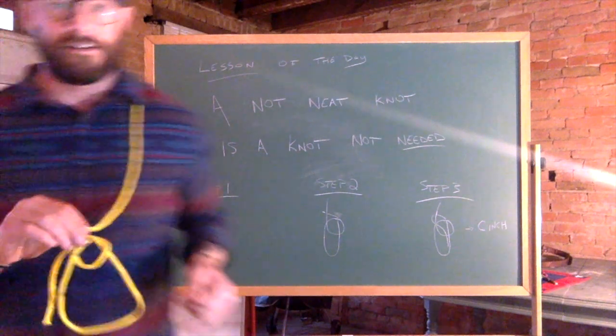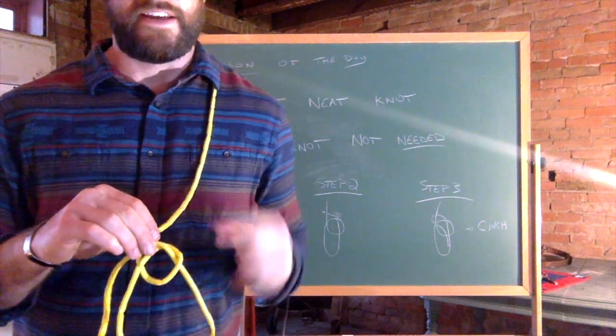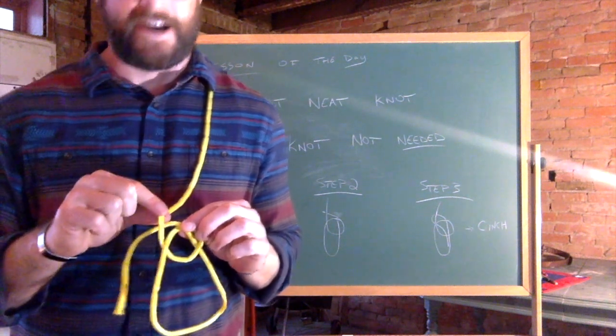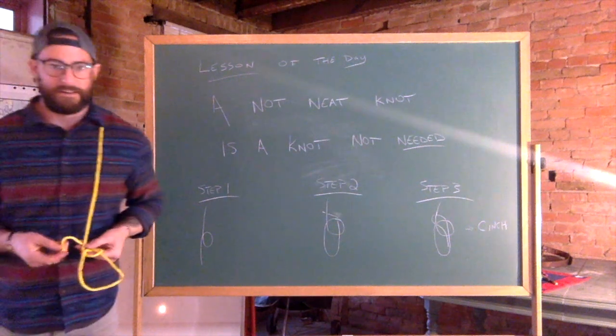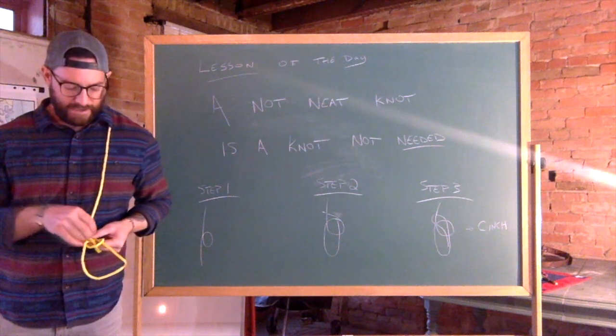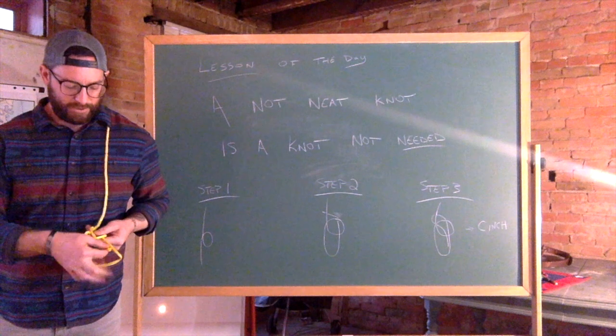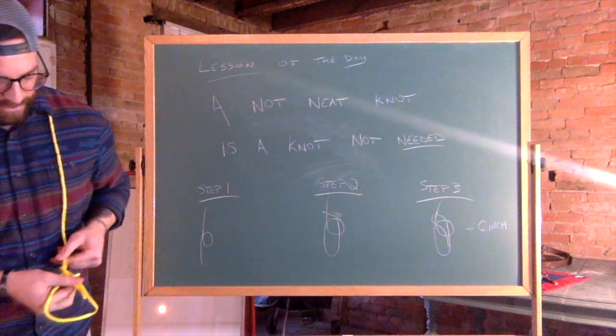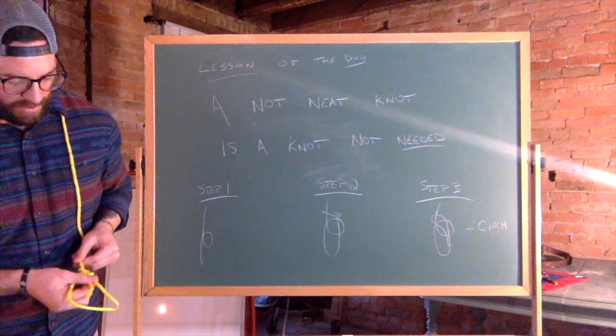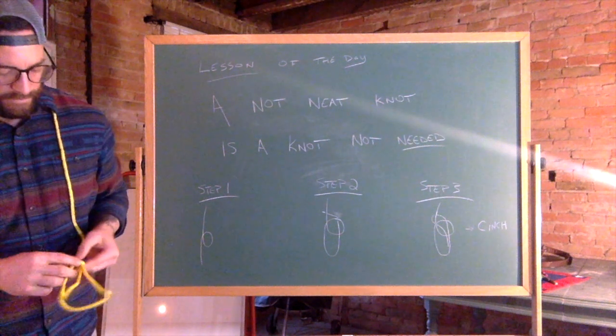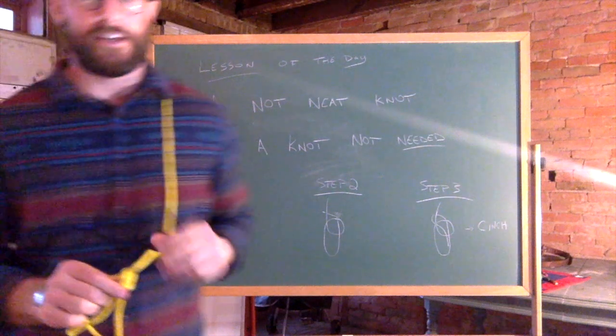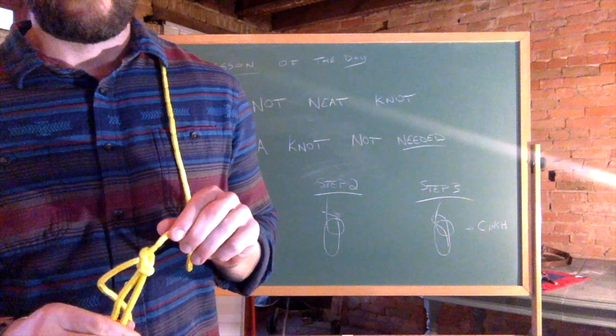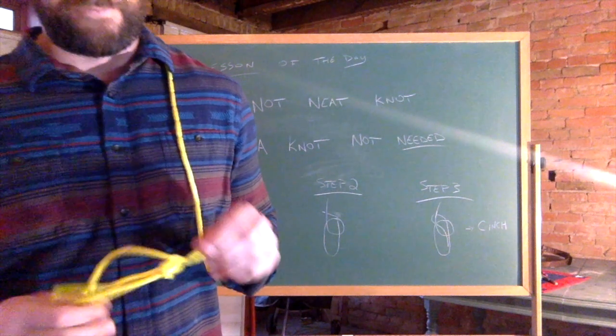Take your tail, rabbit comes out of its hole, and around the tree. So, if you can see, it came up, and then I went around this rope, so my tail's behind it. And then, the rabbit sees the hawk, jumps back into its hole, and then you just cinch it down. And you can see, it cinches down on the body, making a good knot.